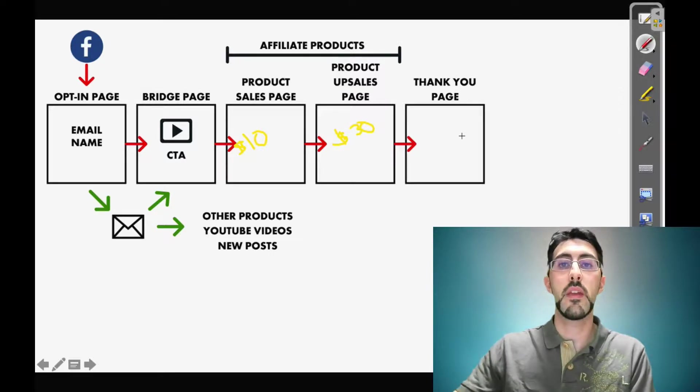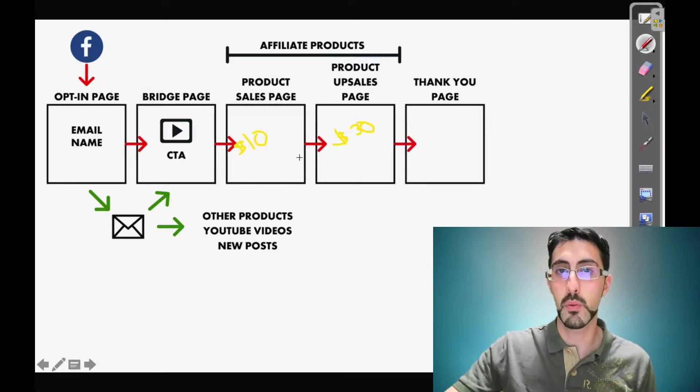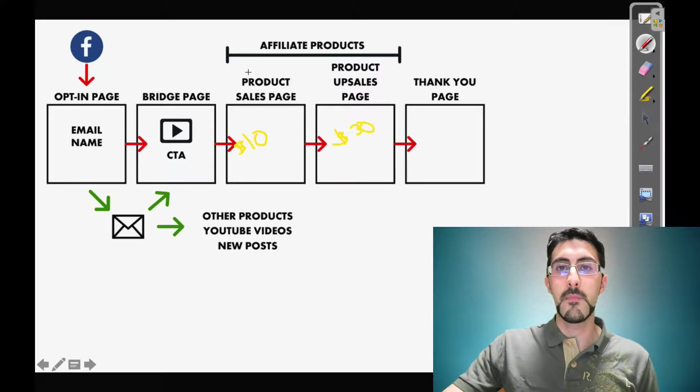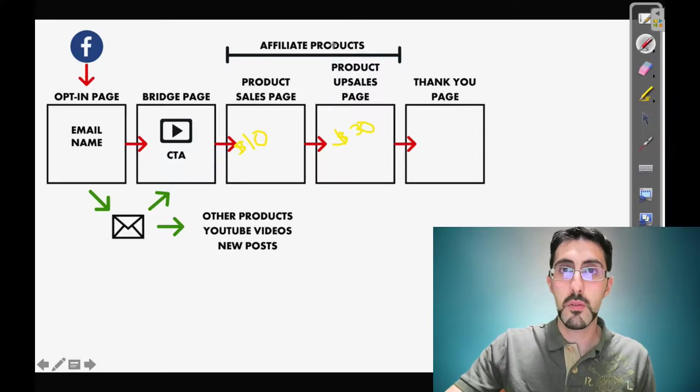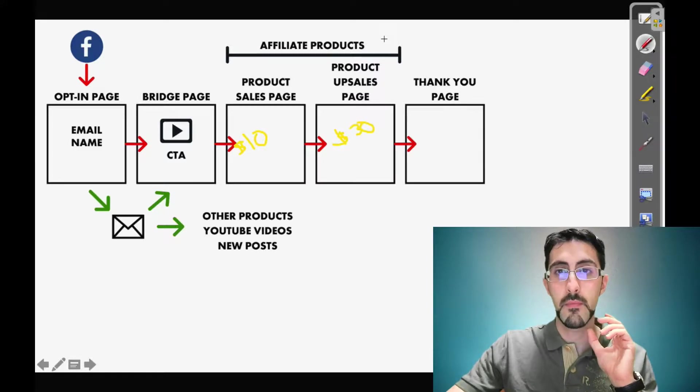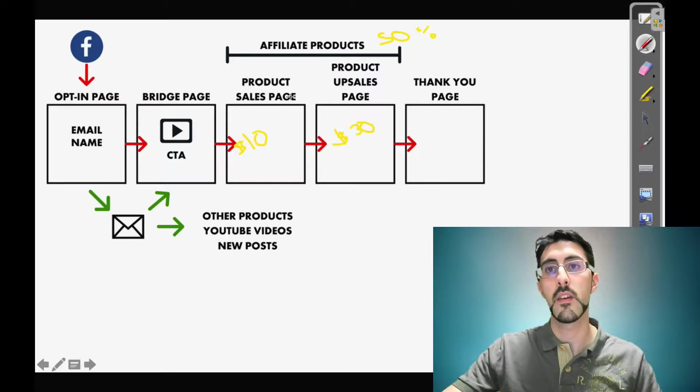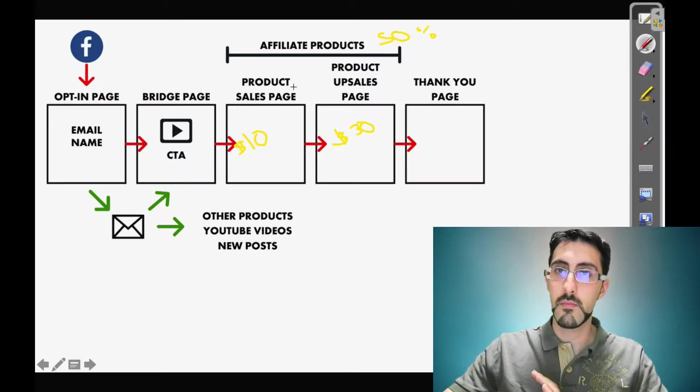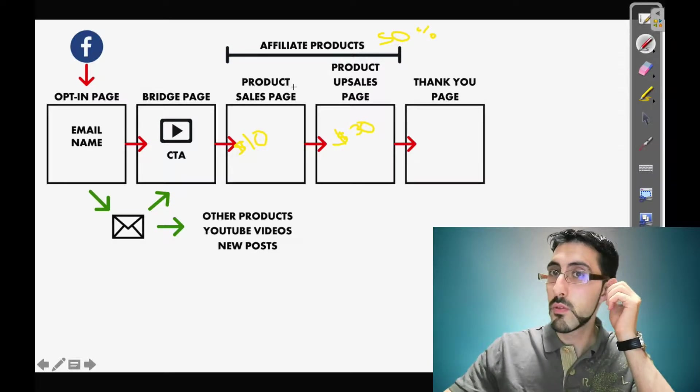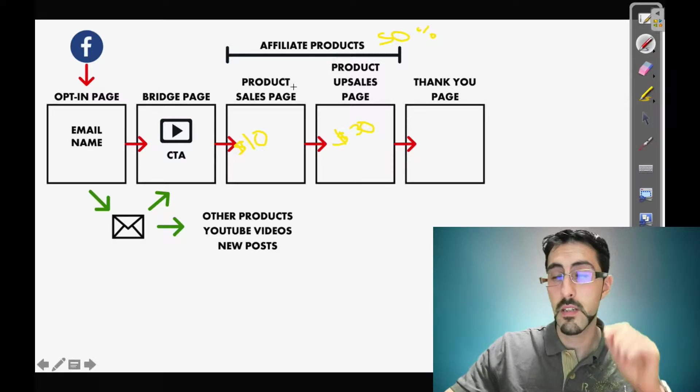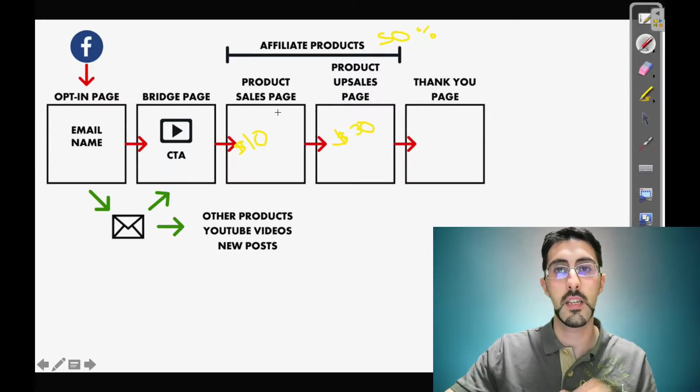These products can maybe be affiliate products, but have in mind that if it's an affiliate product, usually you are not going to have more than 50% of the price of the product. 50% top is used to be 75%, something like that. So just keep that in mind.